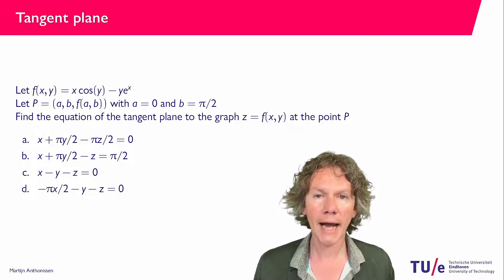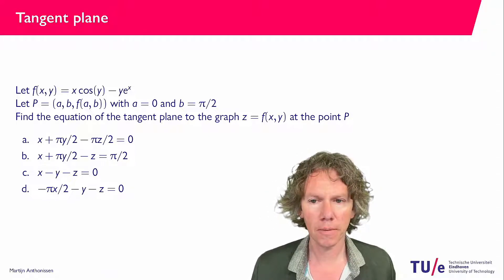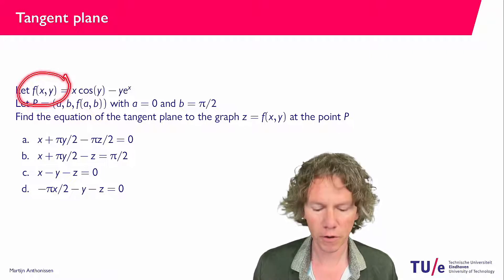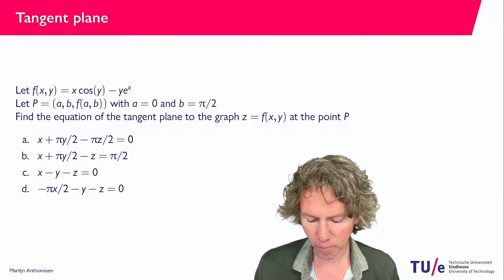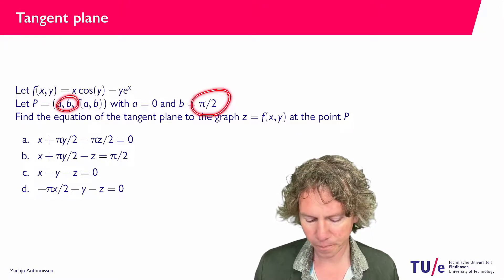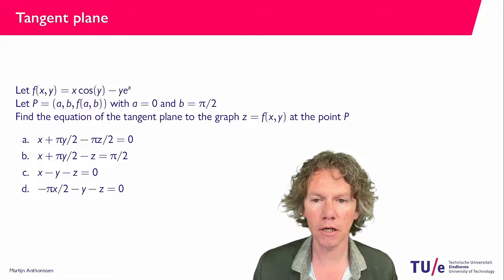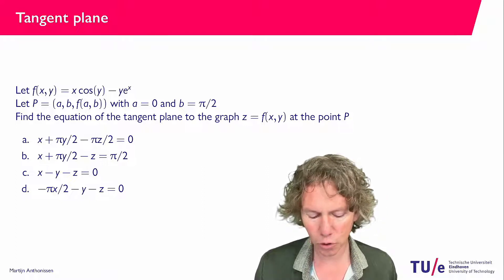Welcome to this video in which we're going to answer the question on this slide. We have a function f of x and y — a function of two variables given by x times the cosine of y minus y times the exponential function of x. We are given a point p with coordinates x equals a which is 0, y equals b which is pi over 2, and the function value at a and b. We're asked to find the equation of the tangent plane to the graph of this function.